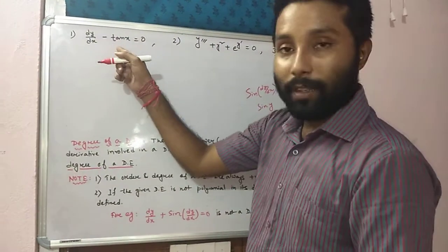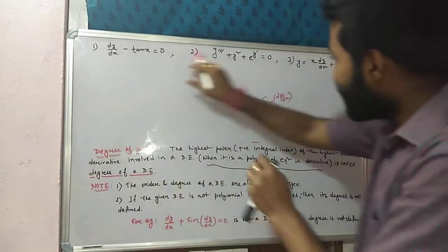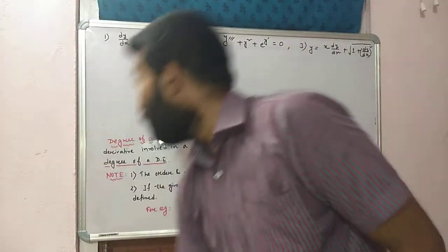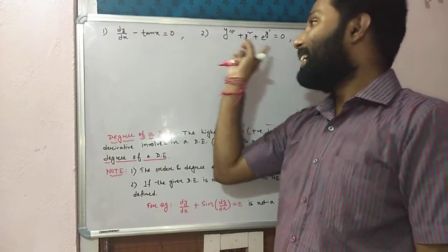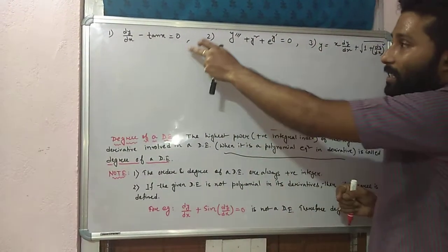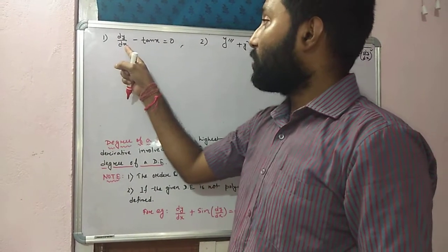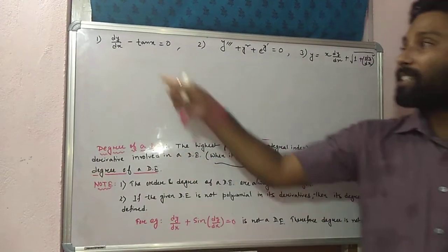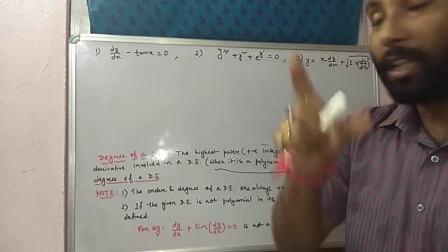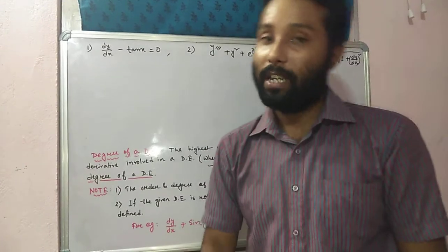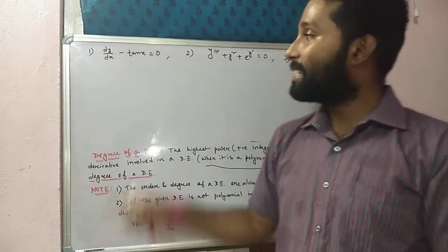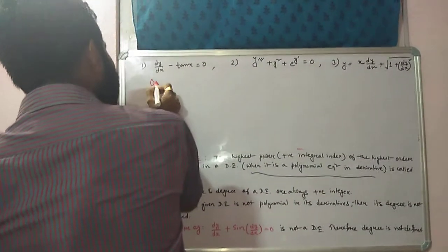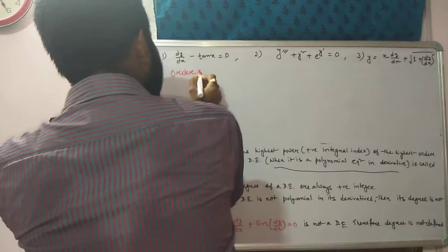Take this example. Find the order and degree of these three questions. First question: dy/dx - 10x = 0. First of all, check whether it is a differential equation or not. Yes, of course, it is a differential equation. Since it is a differential equation, we can find the order. What is the order? Order ka matlab: maximum jitna bar differentiation kiya gaya hai ek equation ko, wohi hota hai order.